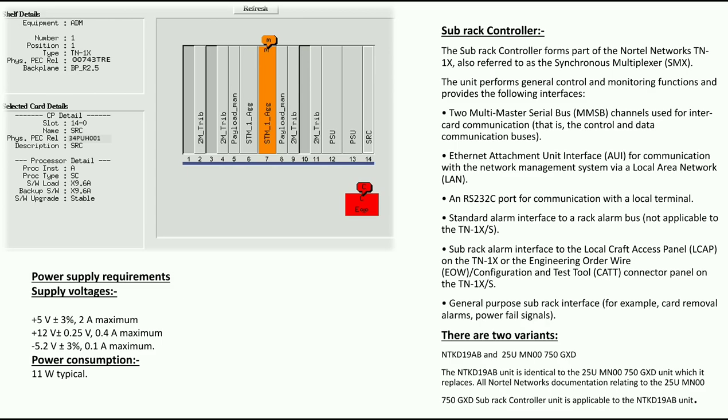Now we are moving to the sub-rack controller in Slot 14. The sub-rack controller performs general control and monitoring functions and provides the following interfaces: MMSB, Ethernet Attachment Unit, RS-232, extended alarm interface, and sub-rack alarm interface for local craft access. There are two variants available.